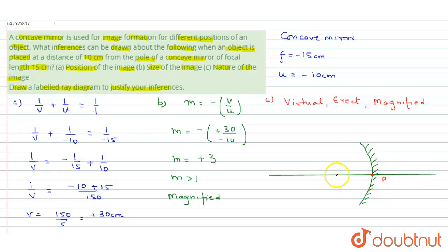Let us label down the values. This is the pole. Let this be focus. This be the center of curvature. Now, your object is kept between pole and focus. So it is somewhat kept near like this.